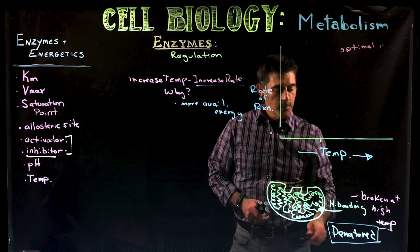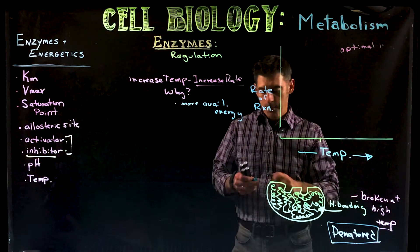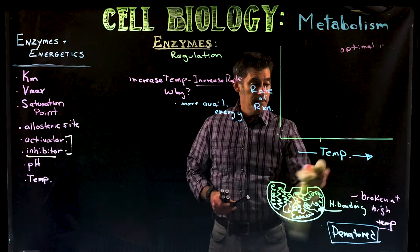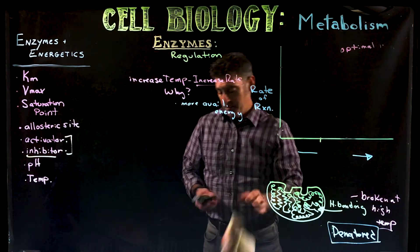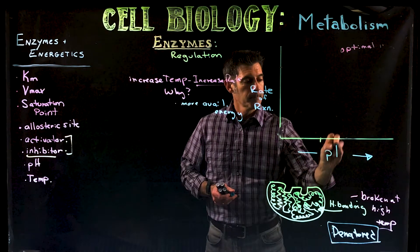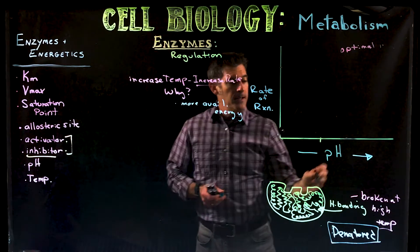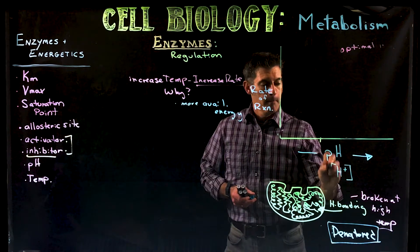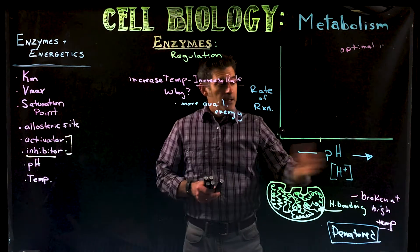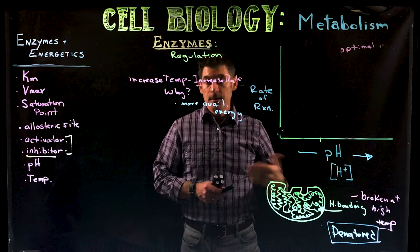So hydrogen bonds are broken, the shape changes, the protein doesn't have the binding sites really functional anymore. So nothing happens. Remember, pH is hydrogen ion concentration. As we increase the pH, it becomes more acidic, right?